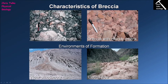The types of environments in which we would expect to find breccias would be steep mountain environments, where we might have landslides or debris flows. Here we have a valley with a debris flow coming down and spreading out to form a fan-shaped feature which we refer to as an alluvial fan.